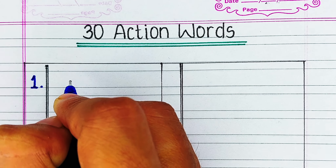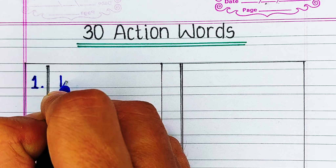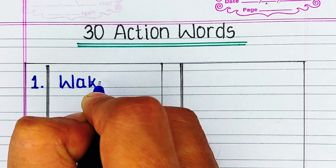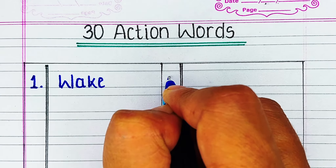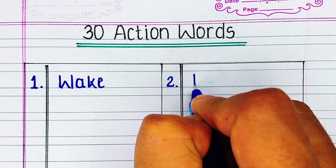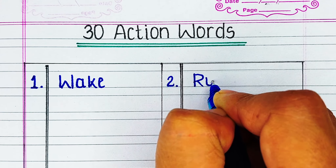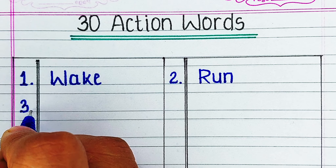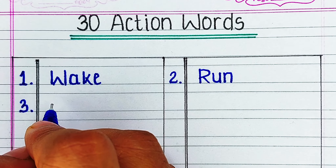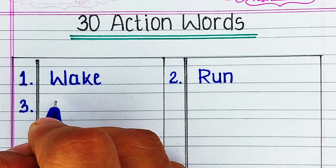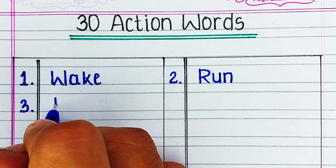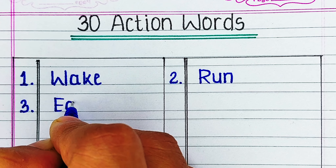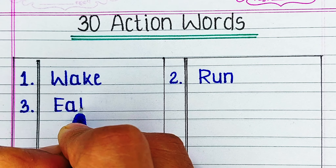Hello viewers, welcome to our channel Try to Learn. In this video we will learn and write 30 action words in English. If you find this video helpful please hit the like button, and for more such videos consider subscribing to our channel Try to Learn. The first word is W-A-K-E, wake.